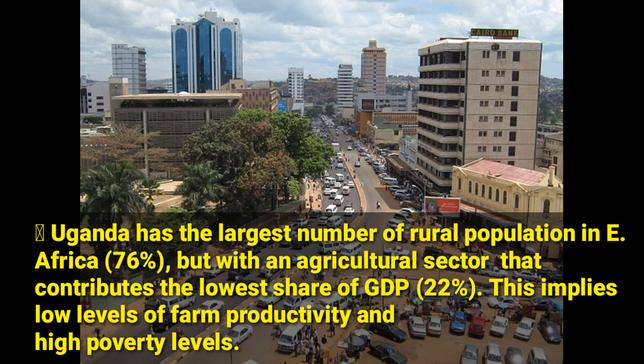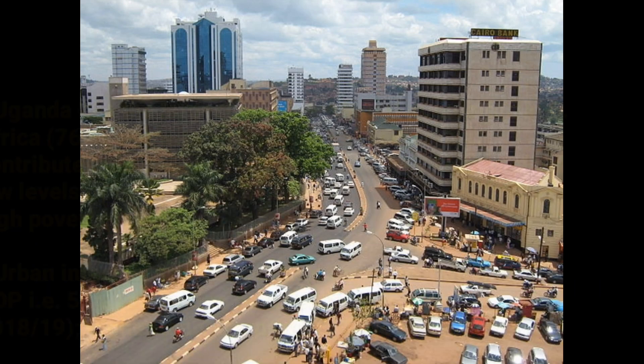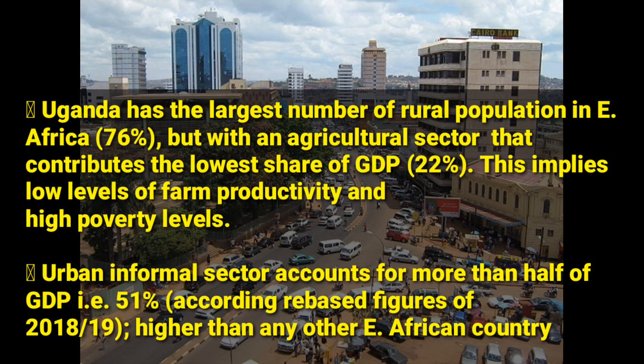Another point is that the urban informal sector accounts for more than half of Uganda's GDP — it contributes 51% according to rebased figures of the 2018 and 2019 financial year, higher than any other East African country. In Uganda, the informal sector contributes more to GDP compared to all other sectors in the economy.